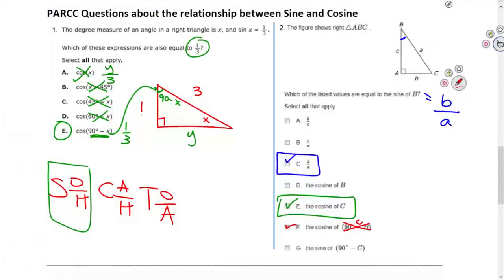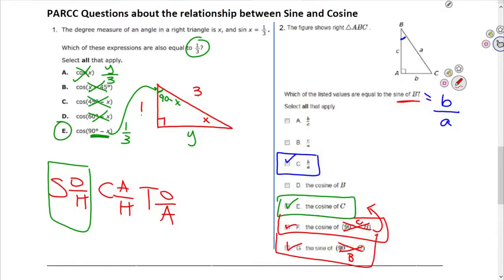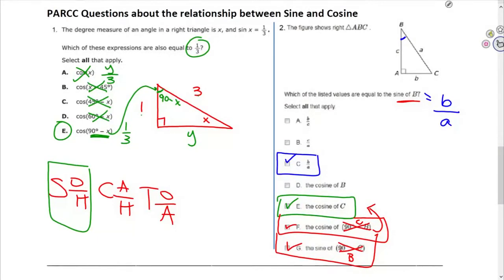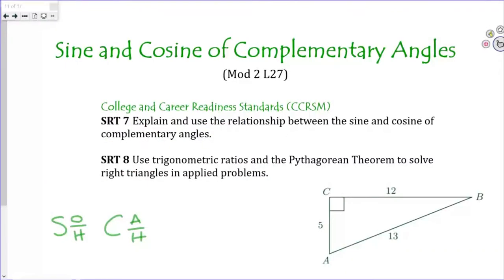When you see 90 minus C, that's talking about the complement of C, which is angle B. So the sine of (90 minus C) is the sine of angle B — that must also be true. Hopefully you have some sense of the idea that the cosine of one angle is the sine of its complement, and that '90 minus something' is talking about the complement. This video was about the sine and cosine of complementary angles — how the sine of A is the same as the cosine of B, and that's where the name cosine comes from. Thank you so much for watching.